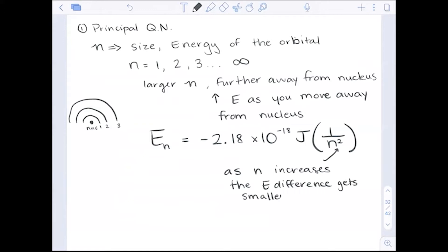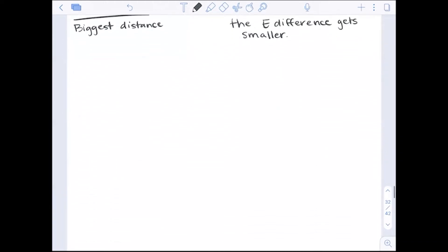So the spacing between n equals 1 and n equals 2 is the biggest difference in energy or the biggest distance. As we get further and further away, if we were to plug in n equals 5 and n equals 6, that difference in energy is very, very small. We'll get into that a little bit more when we start to do our chapter 3 information with how does this relate to the actual electron itself in a specific element.